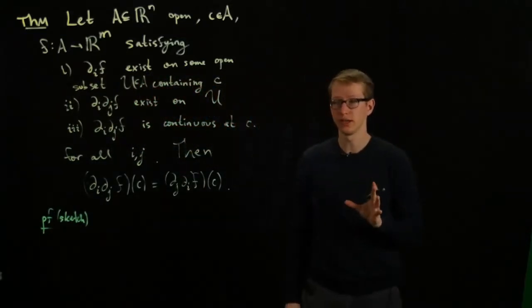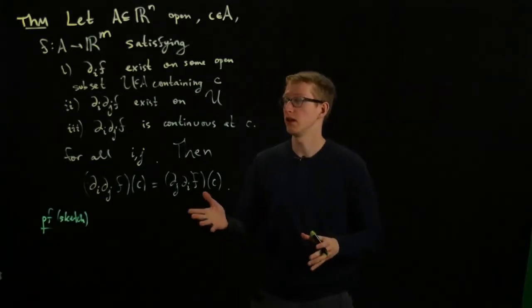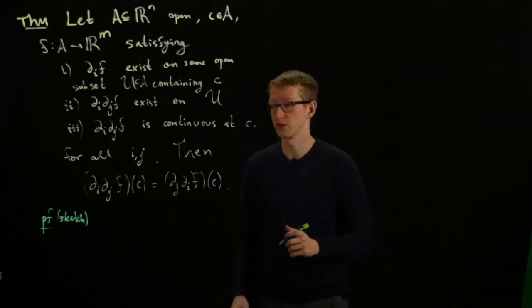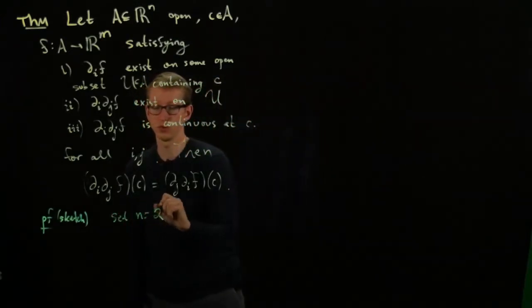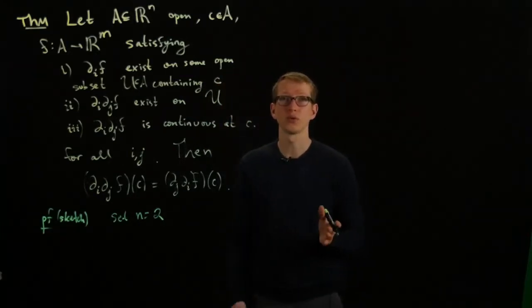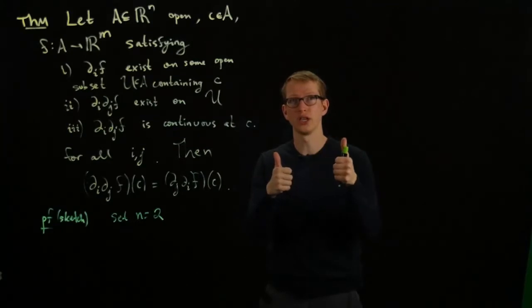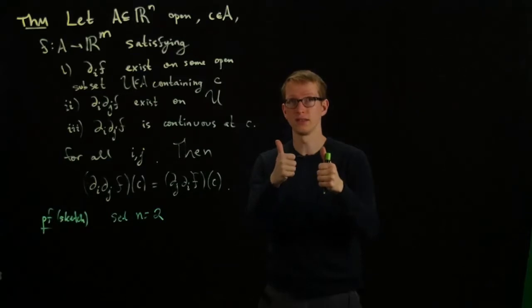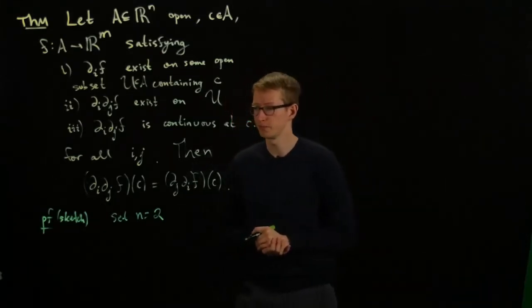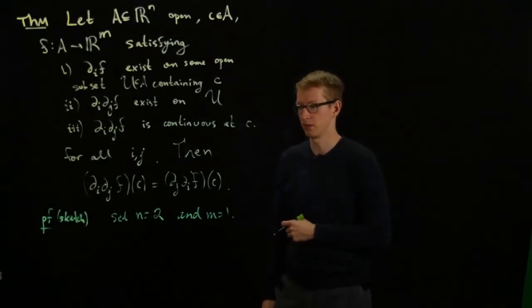How could we even attempt at proving something like this? We should look at the definitions of the partial derivatives. It helps to focus on a single function of two variables for simplicity. Assume n equals 2, and we'll just look at the partial derivatives in the first and second directions. There's no loss of generality here because all we're really doing is fixing variables and seeing how the function changes. It suffices to consider a function of just two variables. M equals 1 is for simplicity.